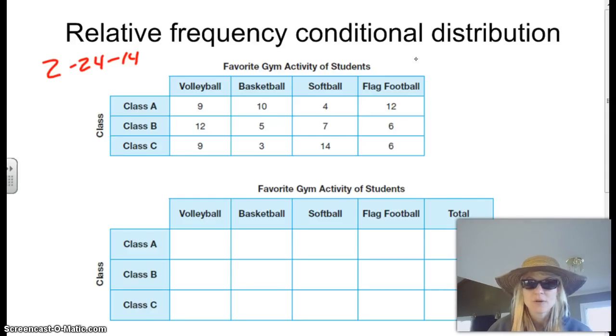We've talked about just a two-way frequency table, which we have here. And then we've talked about marginal distribution, which is where we add the total column here and here. And then we're going to do relative frequency conditional distribution, which is basically we're finding the percentage of our categories. So in order to do that, first of all, we have to make this a marginal distribution by grabbing our totals here.